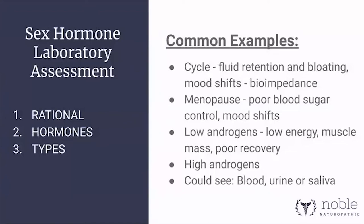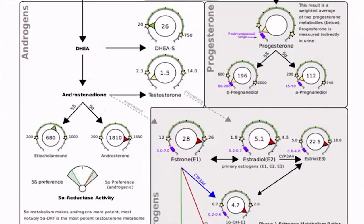You might see functional labs for hormones — this is what a Dutch test looks like. In the lab diagnostics course we go into detail. You're probably going to see blood, urine, or saliva hormone assessments come across your desk, and you don't want the first time you see them to be in front of a client.